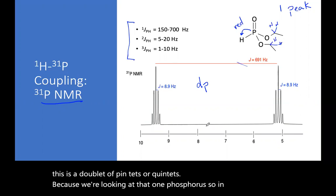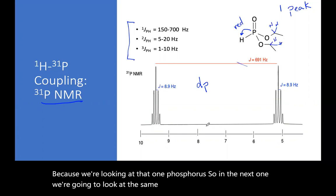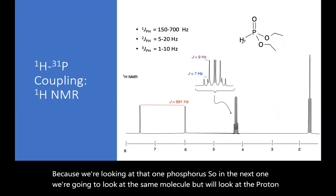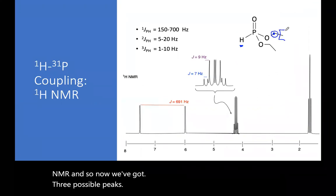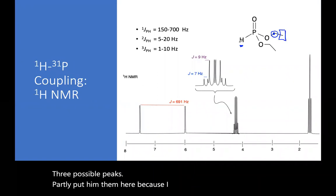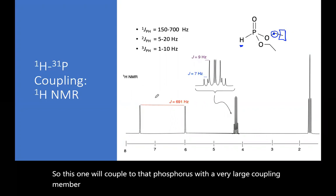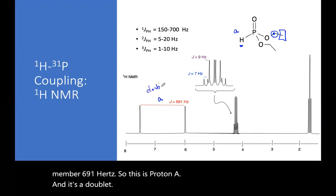So in the next one, we're going to look at the same molecule, but we'll look at the proton NMR. And so now we've got three possible peaks. Let me put them here, because I have three different types of protons. So this one will couple to that phosphorus with a very large coupling, remember, 691 hertz. So this is proton A, and it's a doublet, because it sees the one phosphorus.